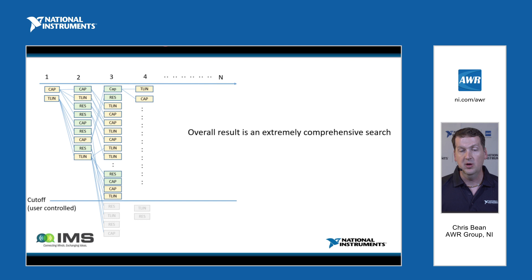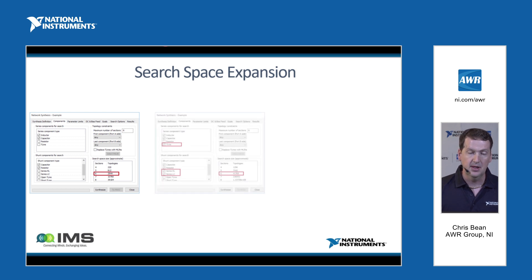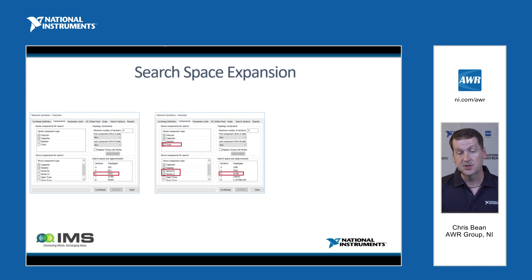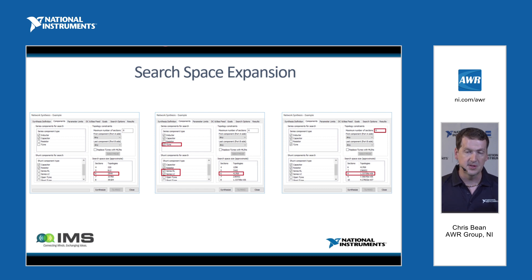Our approach is basically to do an overall exhaustive search through all possible matching network topologies. Looking at how this appears in the software — a dialog shows the user selecting series and shunt components to be considered for those slots, and you can see the maximum number of sections being stipulated. We give you an approximate idea of the search space size. Adding more components or increasing the maximum number of matching sections grows the search space, illustrating that we can handle quite a large search space size, again leveraging the algorithms and raw computing power discussed earlier.